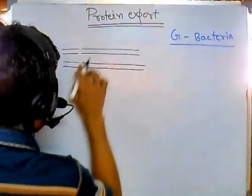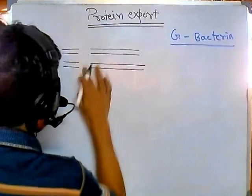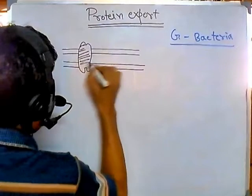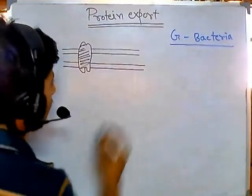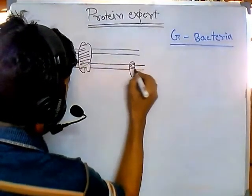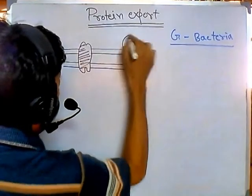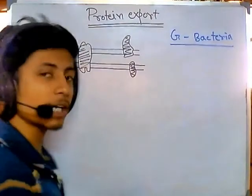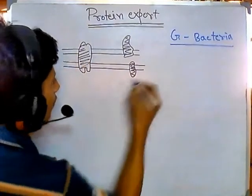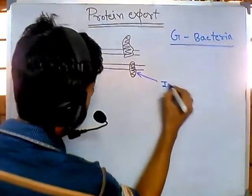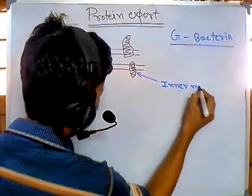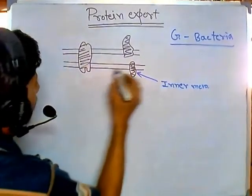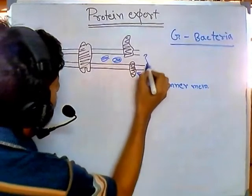Some proteins are embedded in the inner membrane in various orientations. So for a gram-negative bacterium the destination of a protein can be the inner membrane — that is one possible position. Another destination is the periplasmic space, which is also possible.